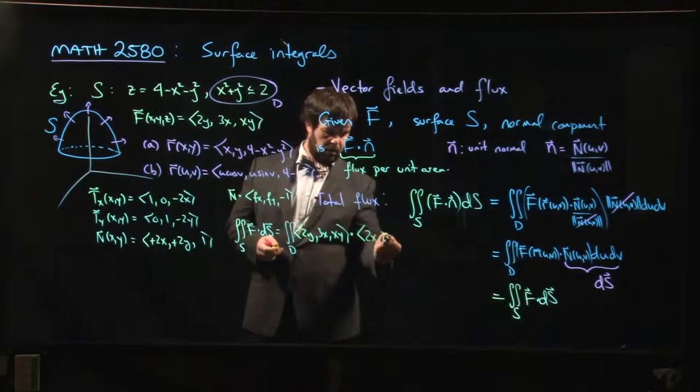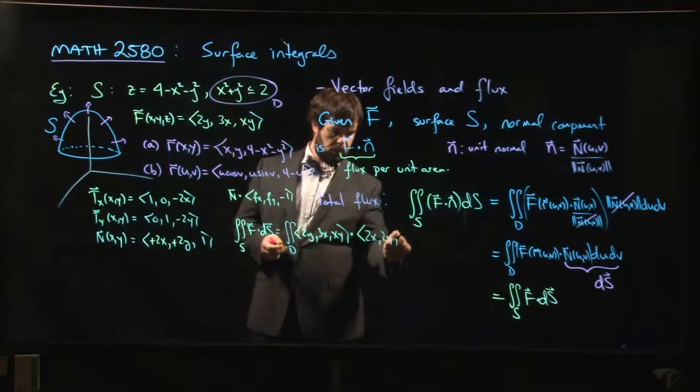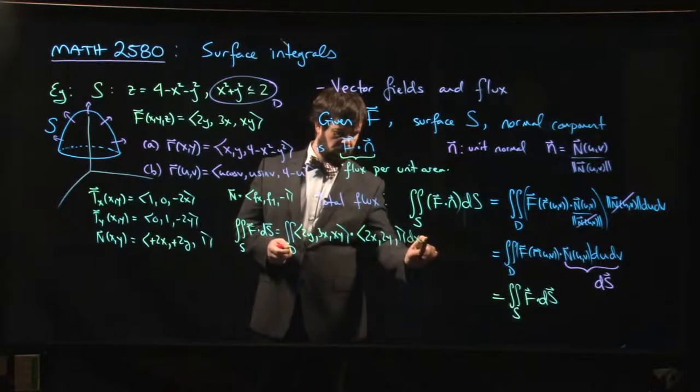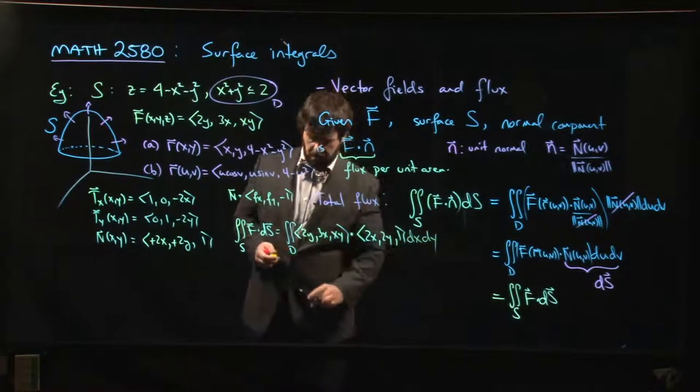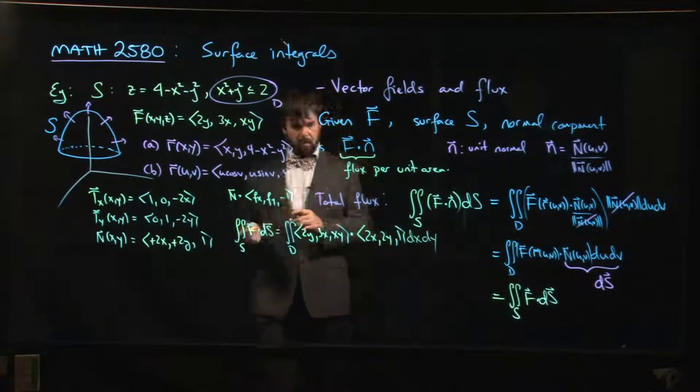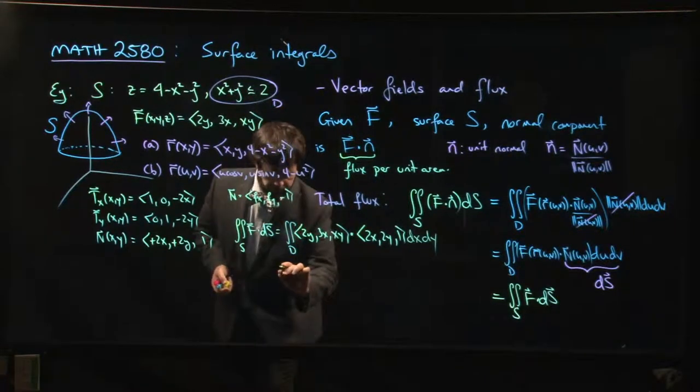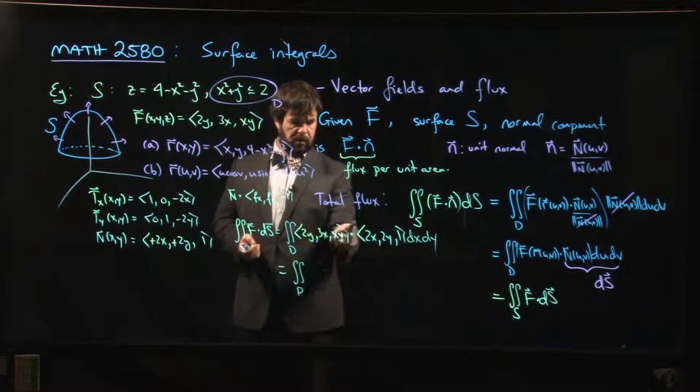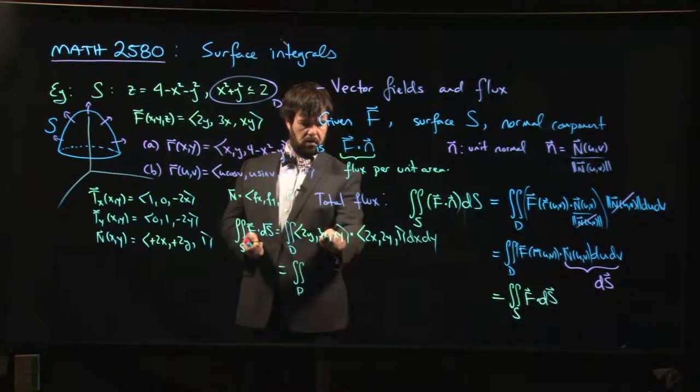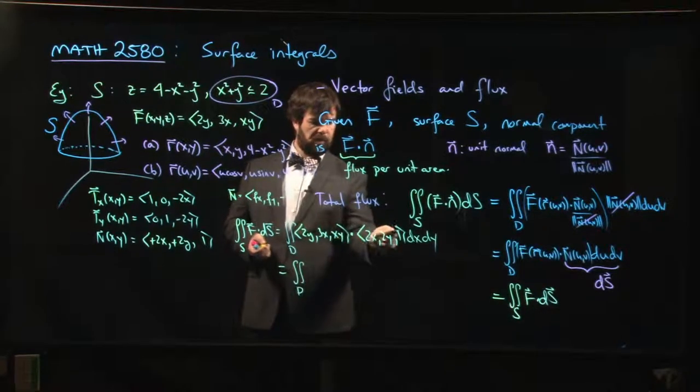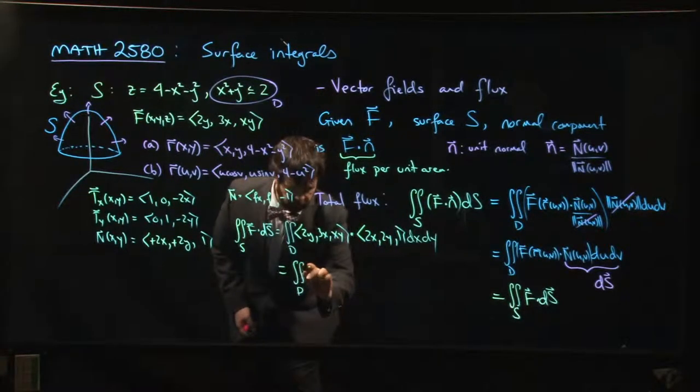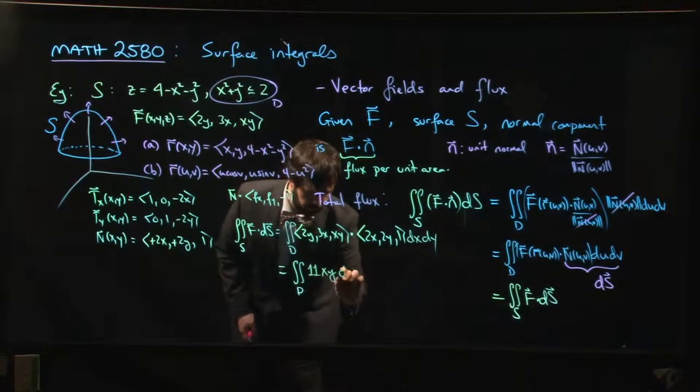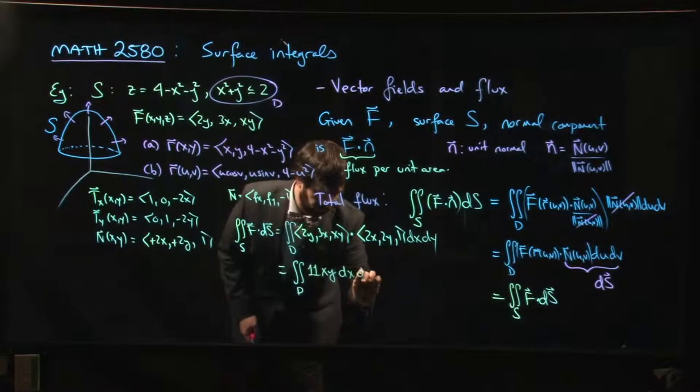So what do we get when we multiply this all out? The integral over D of 4xy plus 6xy plus another 1. Ah, convenient, we get 11xy, and then we're integrating with respect to x and y.